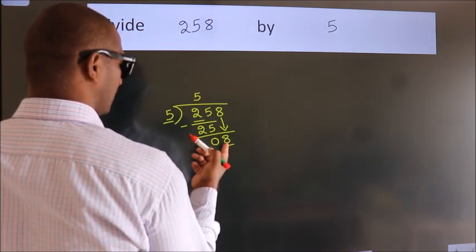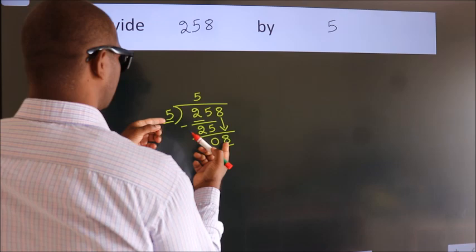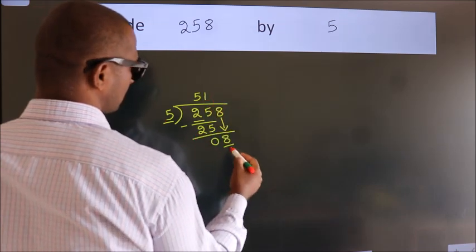So 8. A number close to 8 in the 5 table is 5 once, 5.